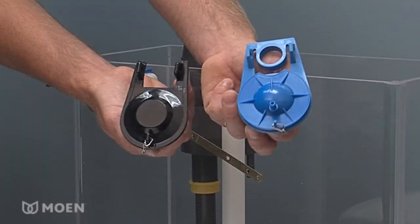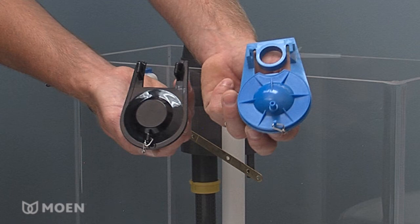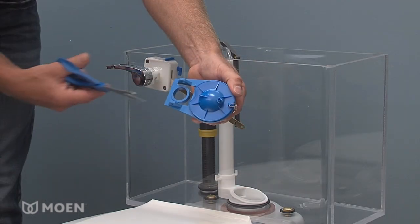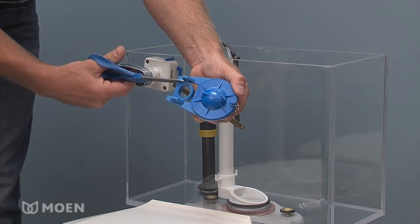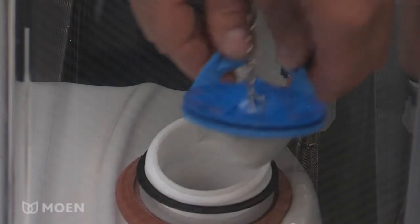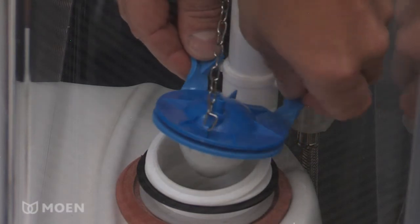Check your old flapper for the ring that is located between the ears. If the ring is intact, slide the ring over the overflow tube and push the dual flush flapper down to the base. If your old flapper does not have this ring as shown, simply cut the ring from the new dual flush flapper using scissors on the cut lines as marked on the flapper. Hook the ears of the flapper onto the hooks at the bottom of the overflow tube.